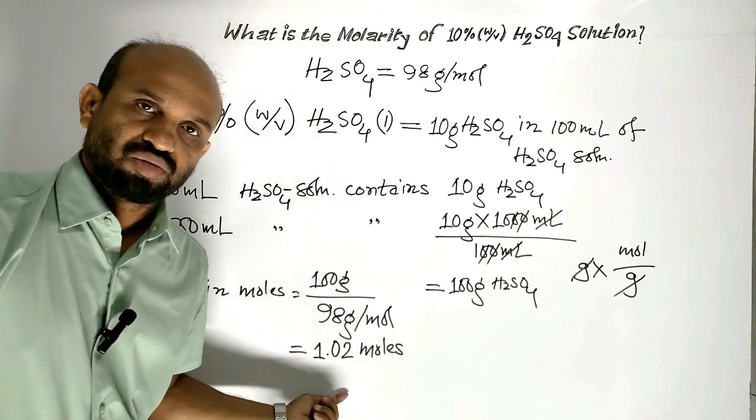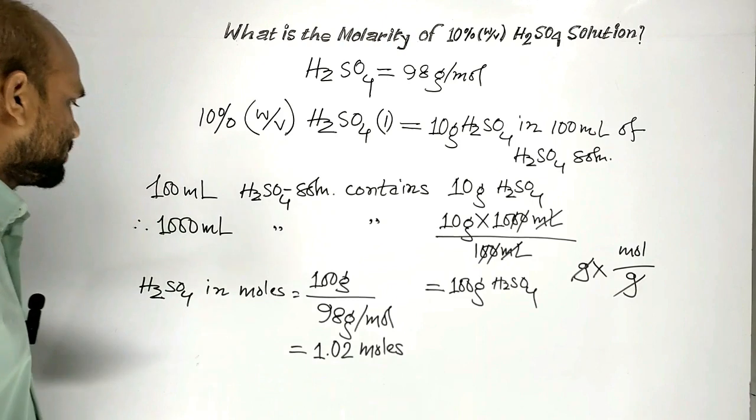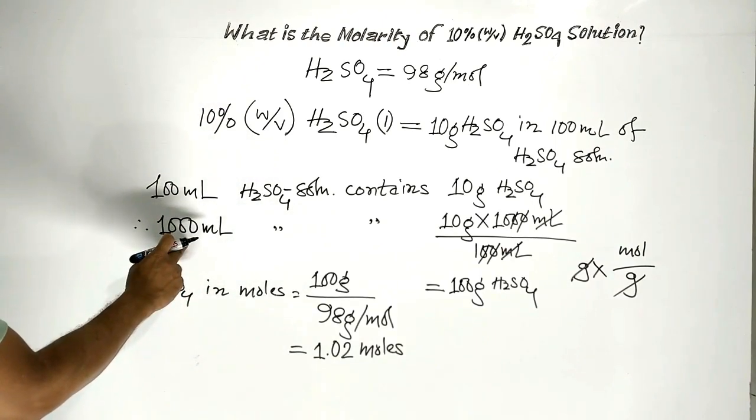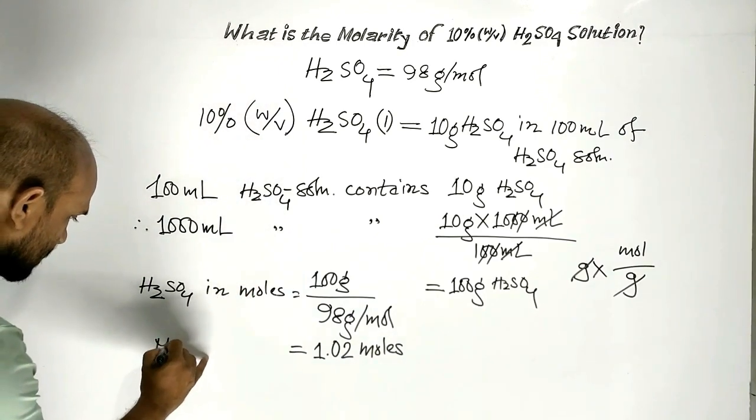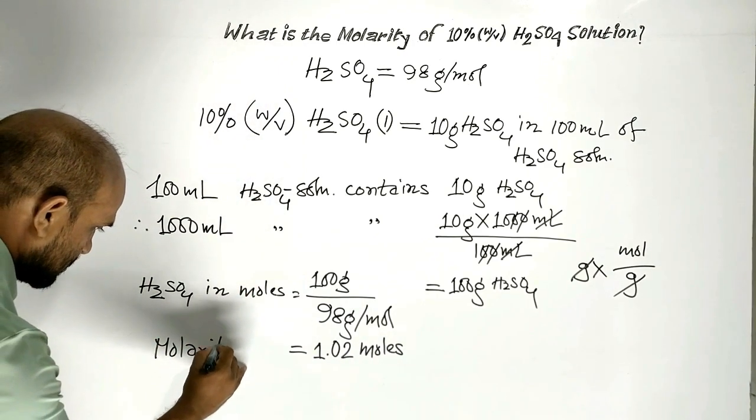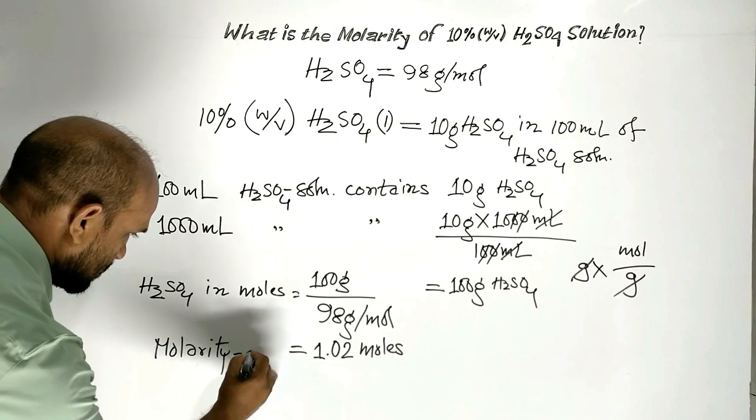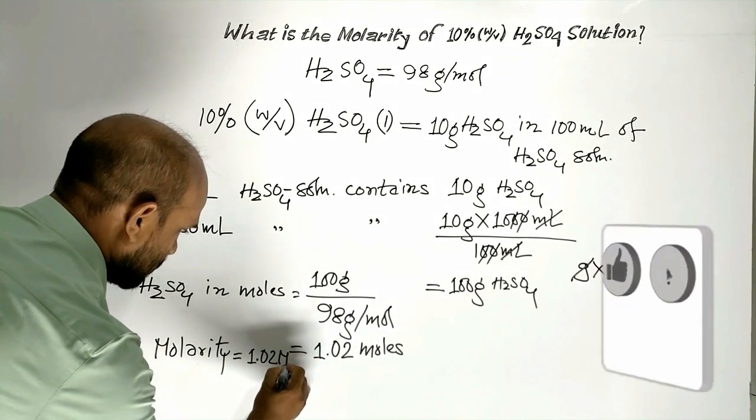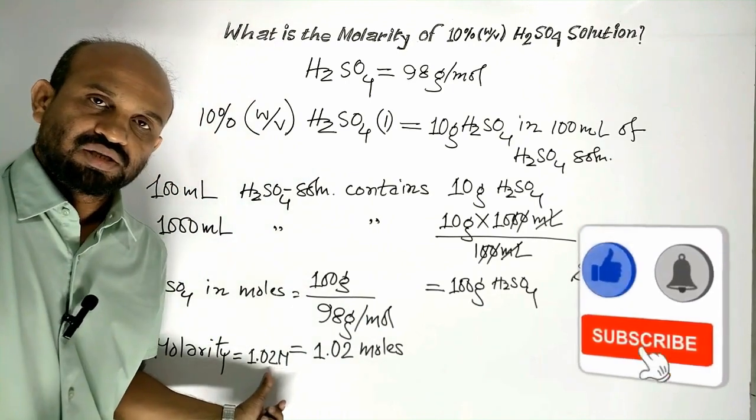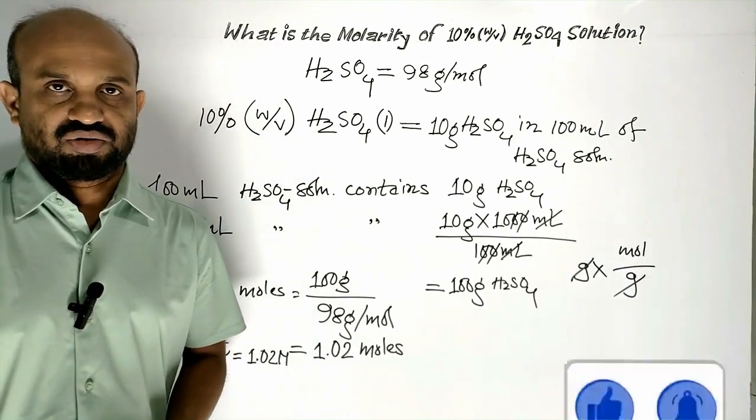1.02 moles of sulfuric acid is dissolved in 1000 milliliters of solution. That is the molarity: 1.02 moles. This is the molarity of 10% sulfuric acid solution.